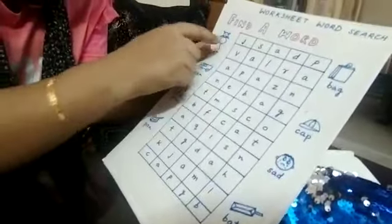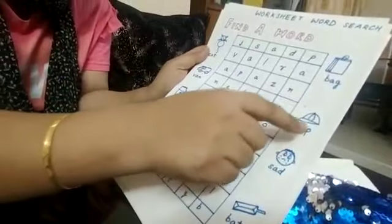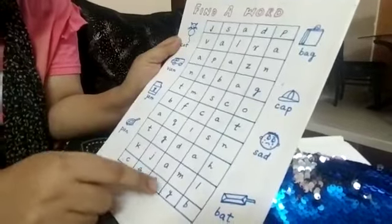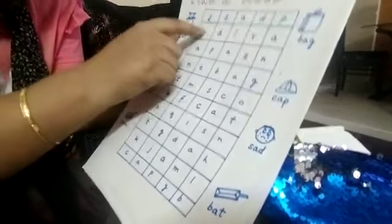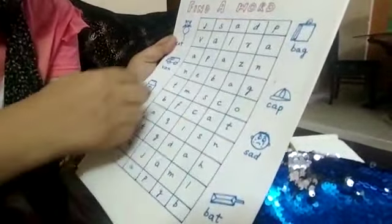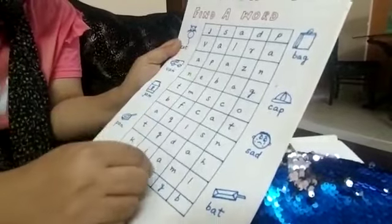Similarly, there is a find-a-word activity. Pictures are shown and the child has to find those words in a puzzle form. The child has to find words like van, jam, pan. Like 'cap' is written in the puzzle — the child will circle it out. 'Van', 'sad' — the child will circle it out. Since these are pictorial and pictures are drawn, the child will find it very interesting.